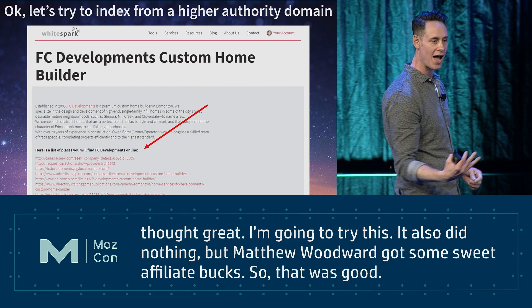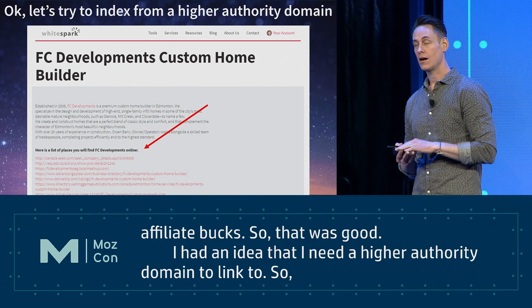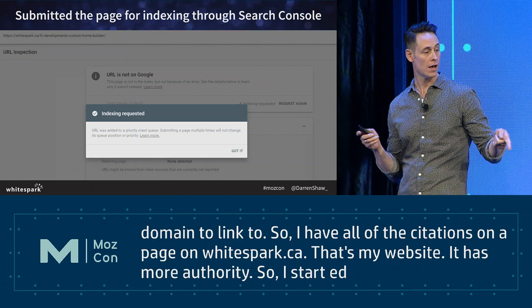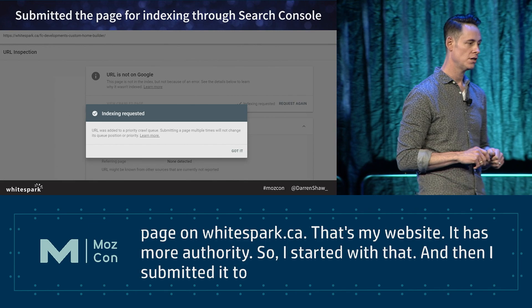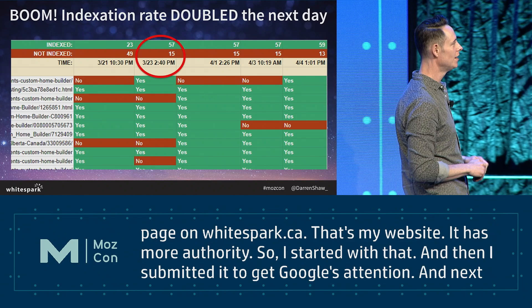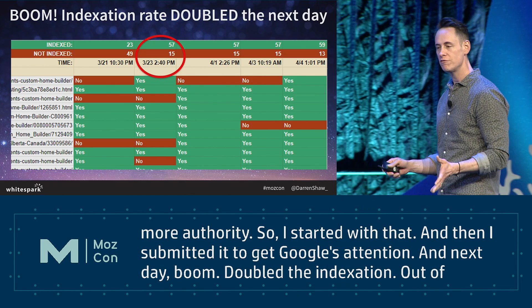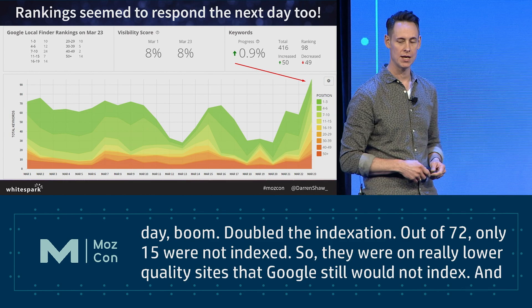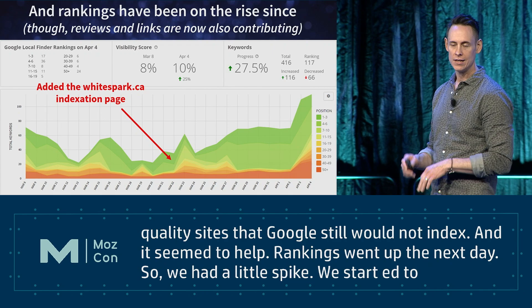I realized I needed a higher authority domain to link to the citations, so I put all the citations on a page on whitespark.ca, which has more authority. Then I submitted it to Search Console to get Google's attention. The next day, boom - doubled the indexation rate. Out of about 72 citations, only 15 were not indexed, and those were just on really lower-quality sites Google still wouldn't index. Rankings actually went up the next day as well.